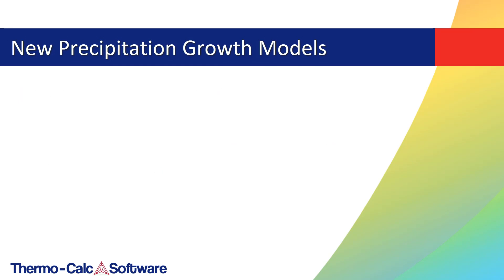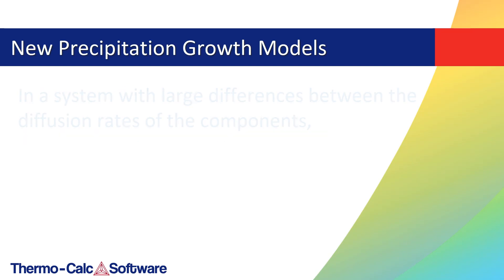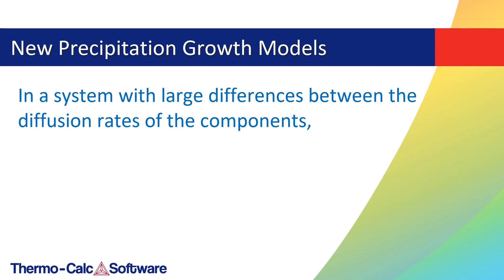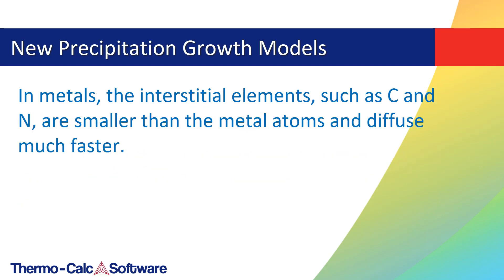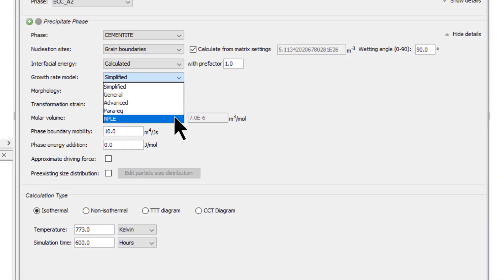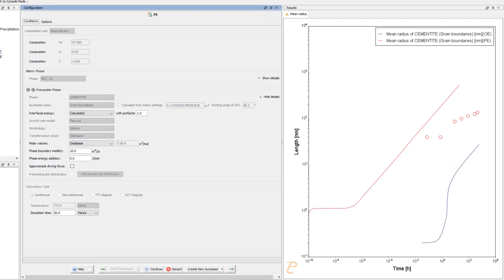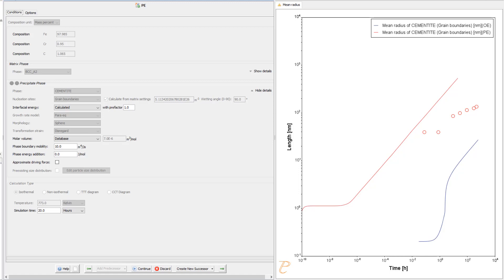The Precipitation module TC-PRISMA includes two new growth models in Thermo-Calc 2019b: Para-equilibrium and Non-Partition Local Equilibrium. In a system where there are large differences between the diffusion rates of the components, there is a possibility to have fast reaction without the need of any redistribution of the more sluggish elements. In metals, the interstitial elements such as carbon and nitrogen are smaller than the metal atoms and diffuse much faster. The Para-equilibrium and Non-Partition Local Equilibrium growth rate models are designed specifically to address the fast diffusing elements in iron alloys. A new example, P13, shows the new Para-equilibrium growth model.